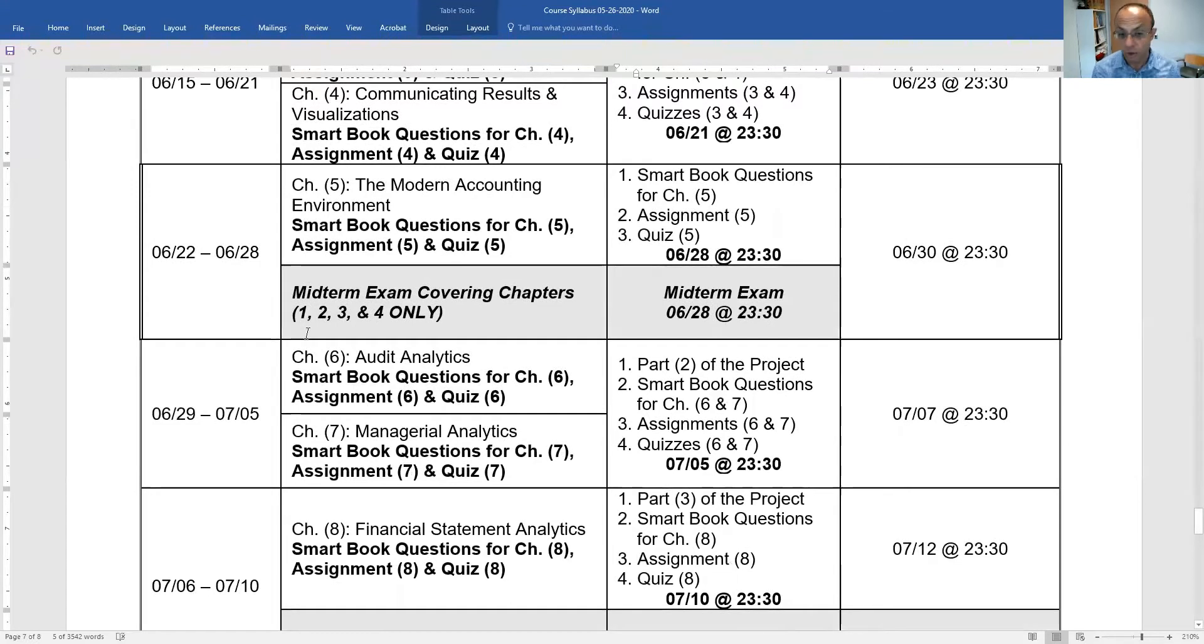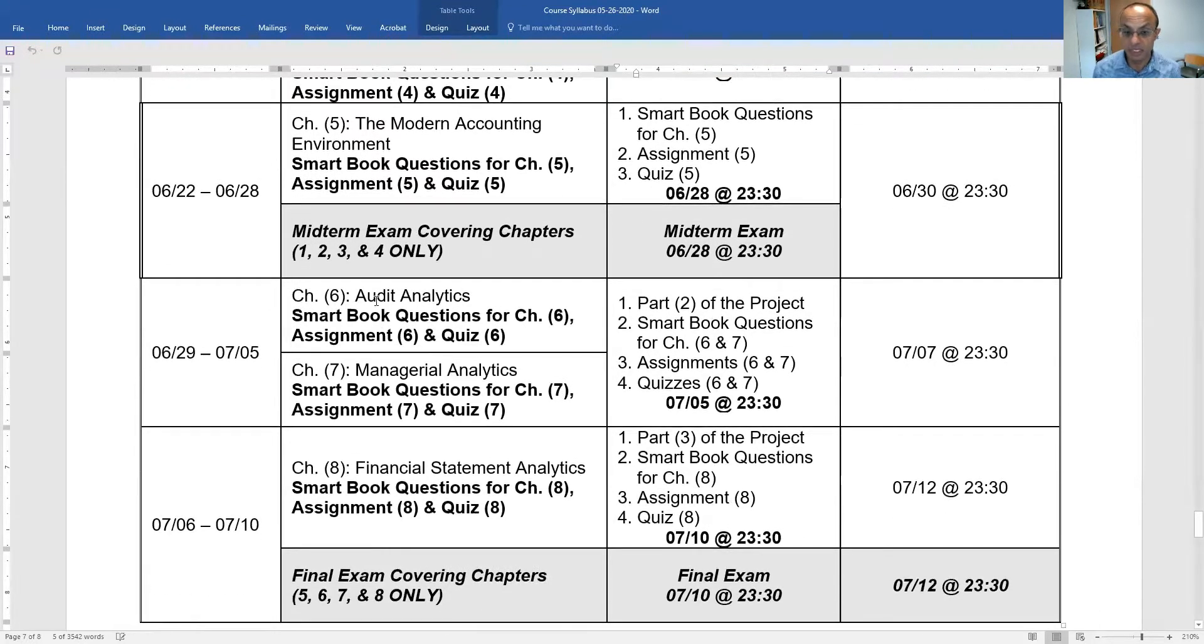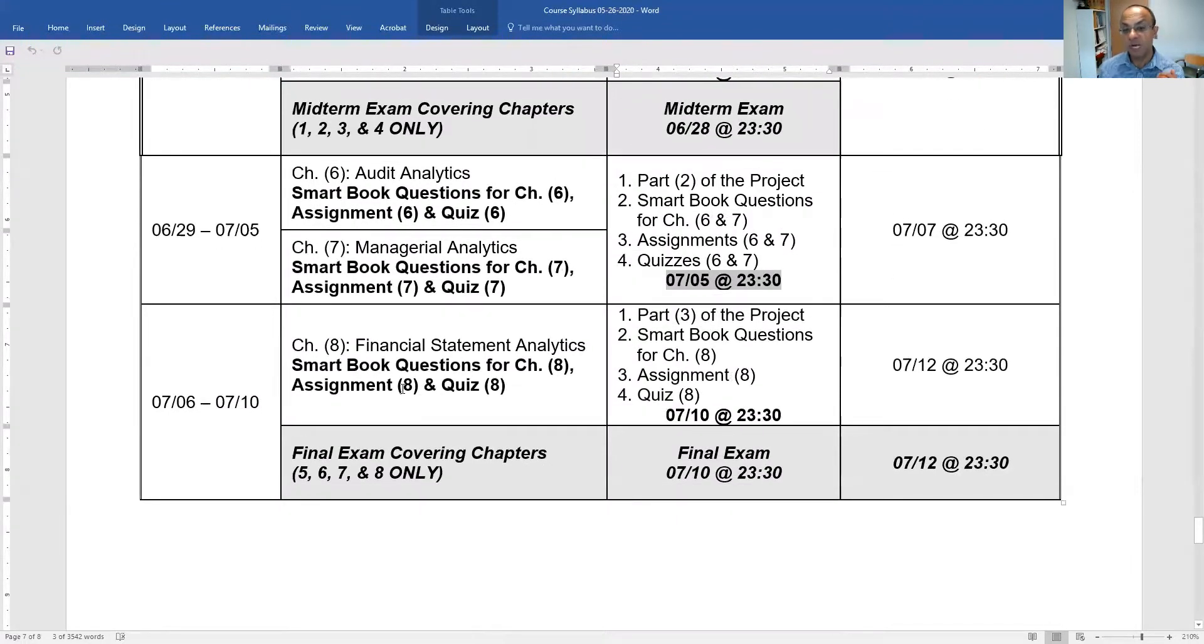In the fourth week, we will study chapter six and seven and we will do the same. We will have smart book questions, assignments and quizzes. But at the end of the fourth week, you are expected to submit part two of the project. So you need to submit all the weekly submissions along with part two by July 5th. And then by July 10th, you will have chapter eight and then you will submit part three of the project.